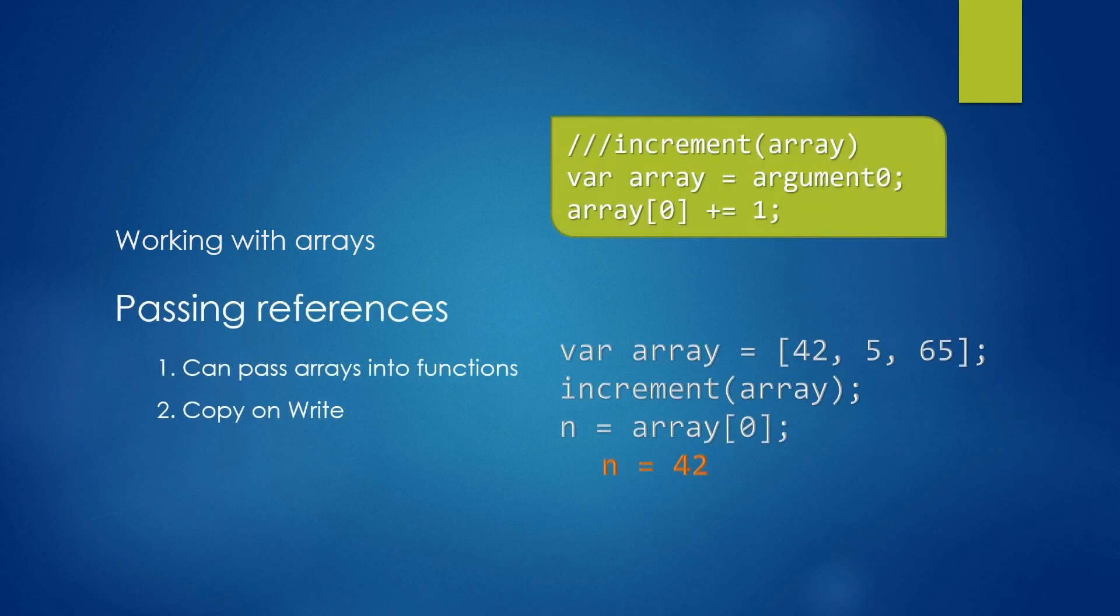However, things get a little bit weird with copy on write. That is to say that if we write to an array inside a script, it will actually copy the reference and copy the array and create a new reference, meaning that we're not modifying the original array.